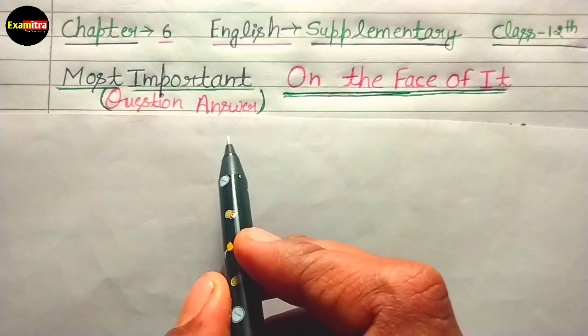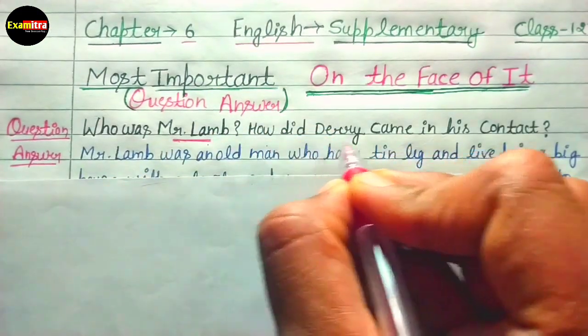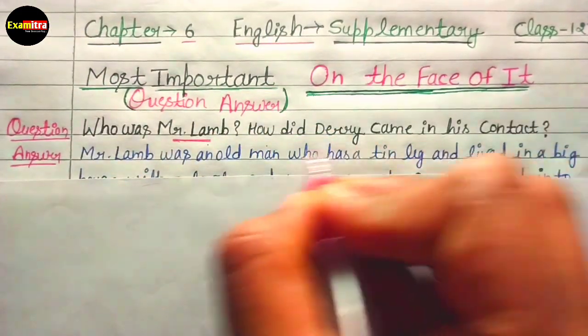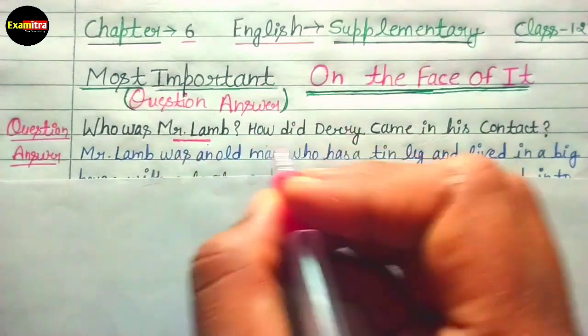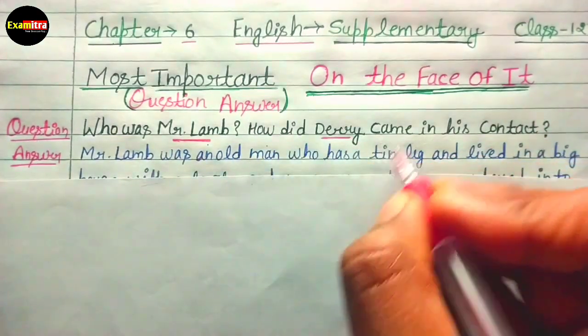So let's start today. The first question is: How was Mr. Lamb, and how did Derry come in contact with him? That is, who was Mr. Lamb and who was Derry, and how did Derry come in contact with Mr. Lamb?